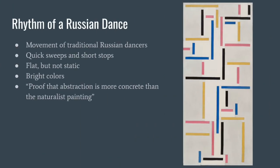This next piece is called Rhythm of a Russian Dance. It was one of the first pieces of Theo's career just as he was beginning to get into the De Stijl movement. He named it Rhythm of a Russian Dance because the lines of paint are supposed to represent the movements of traditional Russian dancers — they have quick sweeps and short stops, and seem carefully timed. The lines of color are either horizontal or vertical, long and narrow. Normally horizontal and vertical elements seem static, but the way Theo created the painting they seem to imply movement. The bright colors and the name of the painting help the viewer picture the movement.